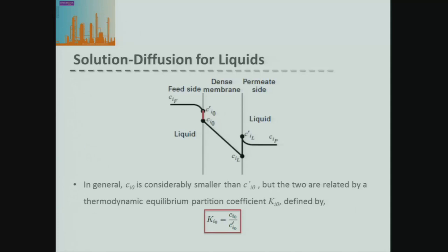So what we need for this case is some kind of model for our adsorption-desorption part. We can look at using equilibrium partition coefficients, which we can write as essentially the ratio of the absorbed material to the non-absorbed material. For different membrane materials and different liquids, we can look up and find values of this partition coefficient.